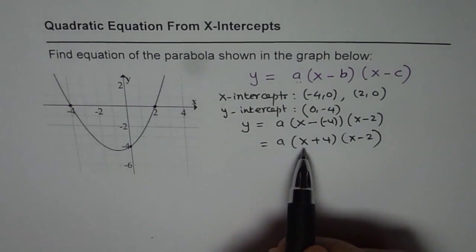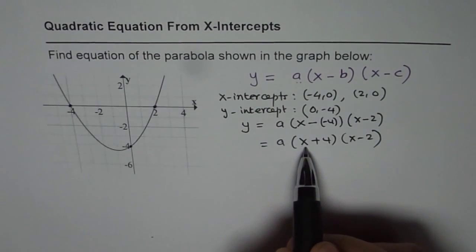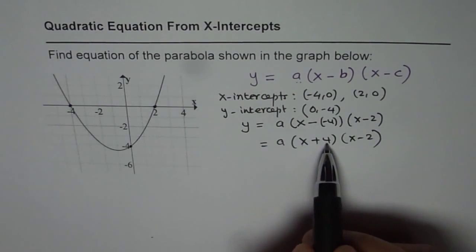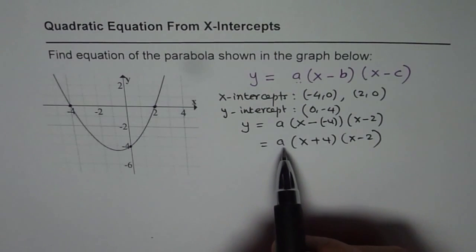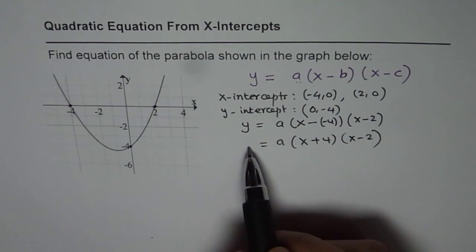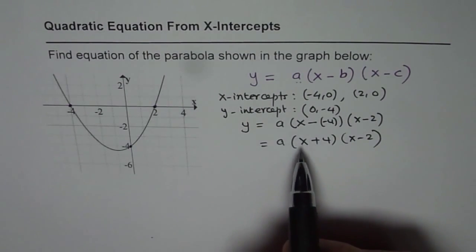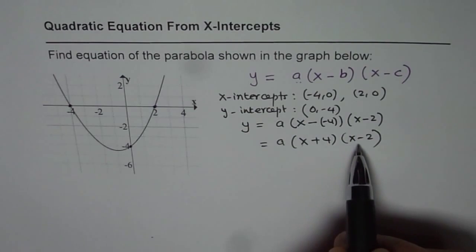Now you can notice if I substitute x as minus 4 in the equation then it becomes 0. Minus 4 plus 4 is 0, anything times 0 is 0, therefore y value will be 0. So that ensures there is an x-intercept at x equals minus 4. Likewise if I substitute 2 for x you will get a 0 there.